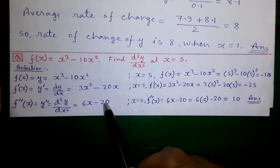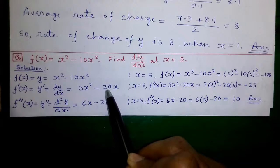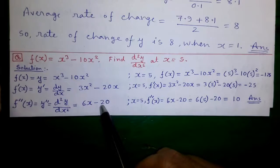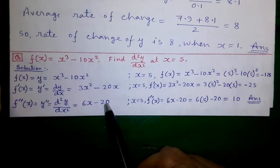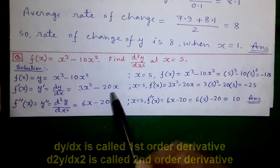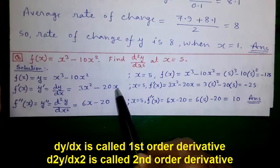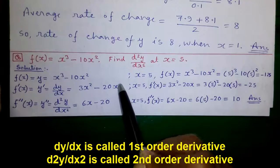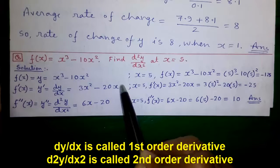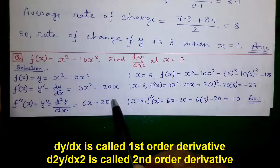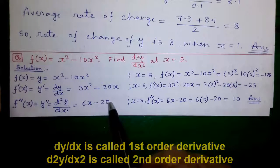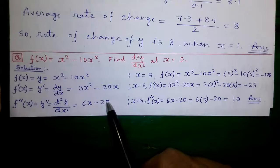The 20 remains the same because in differentiation, constant or numeric values remain unchanged. And the variable — which is x — goes out, so there is only minus 20.